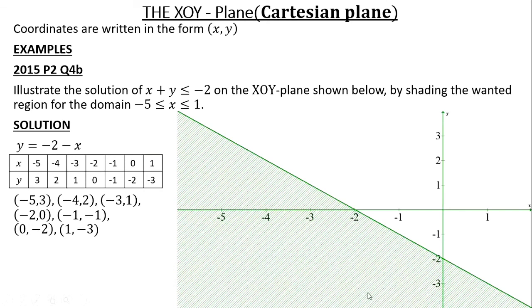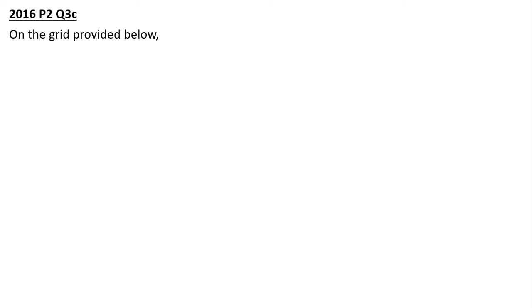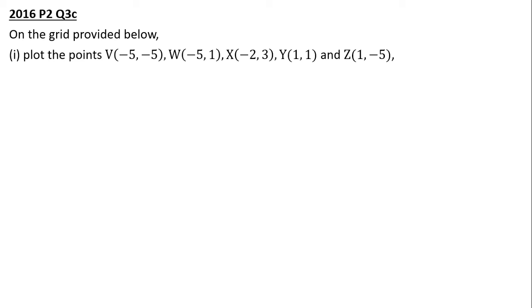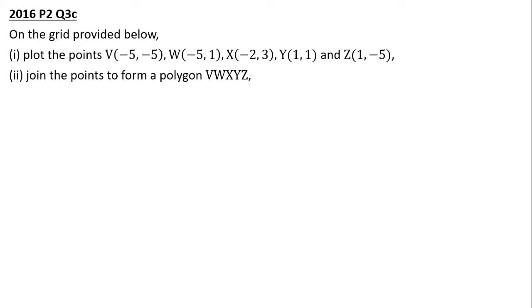We go to the next question. 2016: On the grid provided below, plot the points V(-5, -5), W(-5, 1), X(-2, 3), Y(1, 1), and Z(1, -5). Join the points to form polygon V, W, X, Y, Z. Draw the line X equals negative 2.